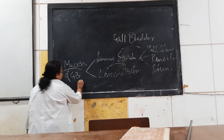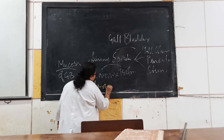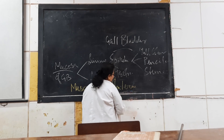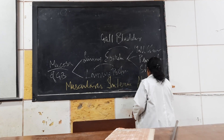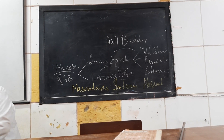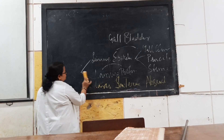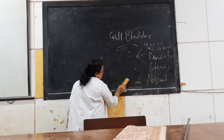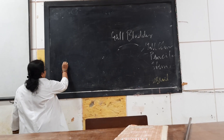The muscularis mucosa, also called muscularis interna, is absent in the gallbladder. Along with this, the sub-mucosa of the gallbladder is also absent.